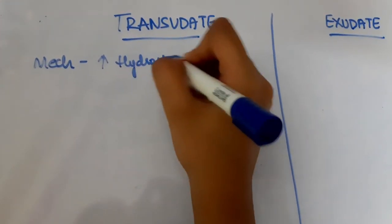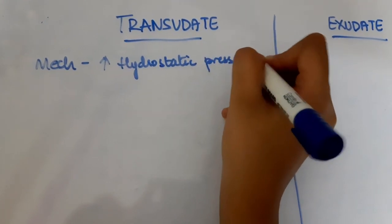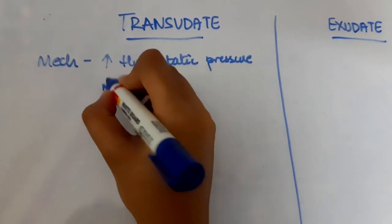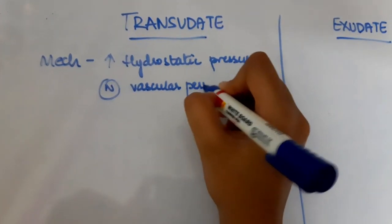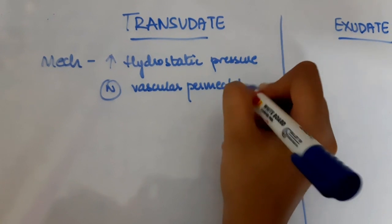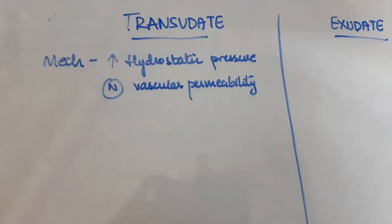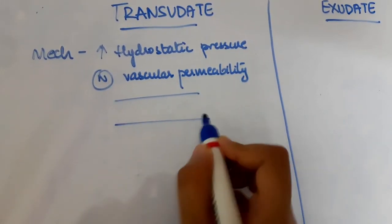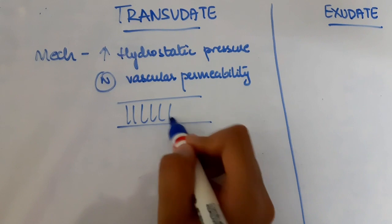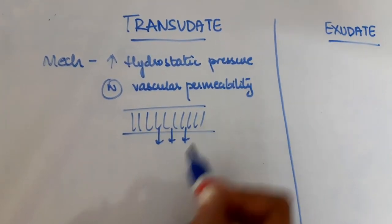Let us first see the mechanism of formation of both of them. Transudates are formed due to increased hydrostatic pressure. We know increased hydrostatic pressure could be either due to accumulation of fluid as seen in heart failure or in superior vena cava obstruction, or there could be a relative increase in hydrostatic pressure due to reduced oncotic pressure. Vascular permeability is perfectly normal in transudates.